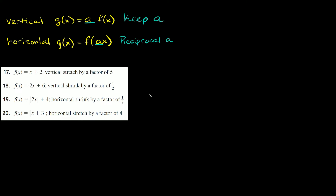Now we're going to go over vertical and horizontal stretching and shrinking. For a vertical stretch or shrink, the rule is g of x equals a times f of x, where a is the factor they give us — keep it as a. For a horizontal stretch or shrink, the rule is g of x equals f of a·x, but here a is actually the reciprocal of what they give us. Let's go over examples to make sense of that.